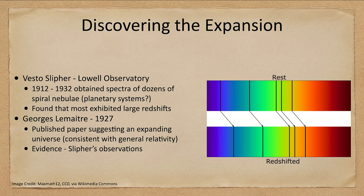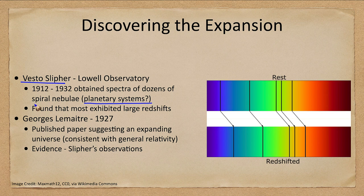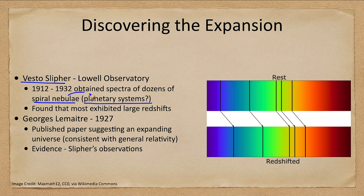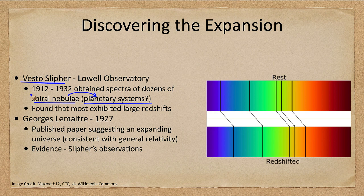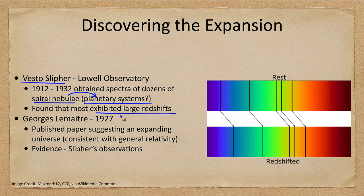This goes back to the early 1900s with a gentleman named Vesto Slipher of the Lowell Observatory. What he was doing was looking for planetary systems around stars. So he was looking at these spiral nebulae thinking perhaps that they were planetary systems in the process of formation. Remember that until the mid-1920s we did not know that the spiral nebulae were actually distant galaxies and found unusually that they all exhibited large red shifts.